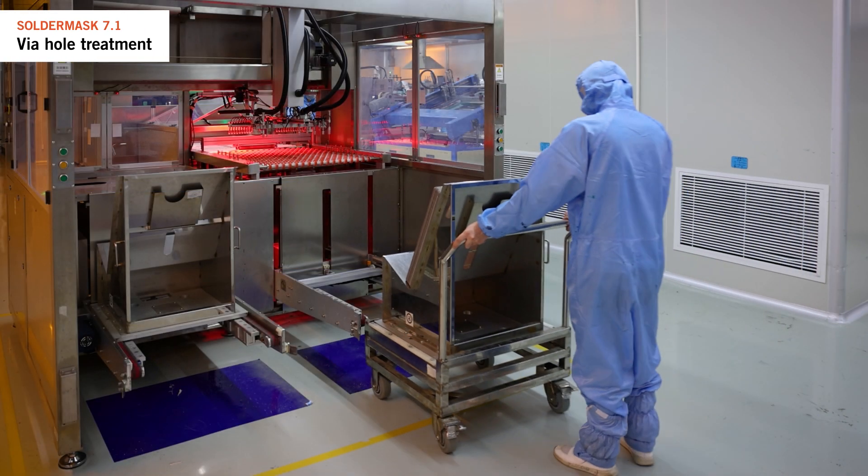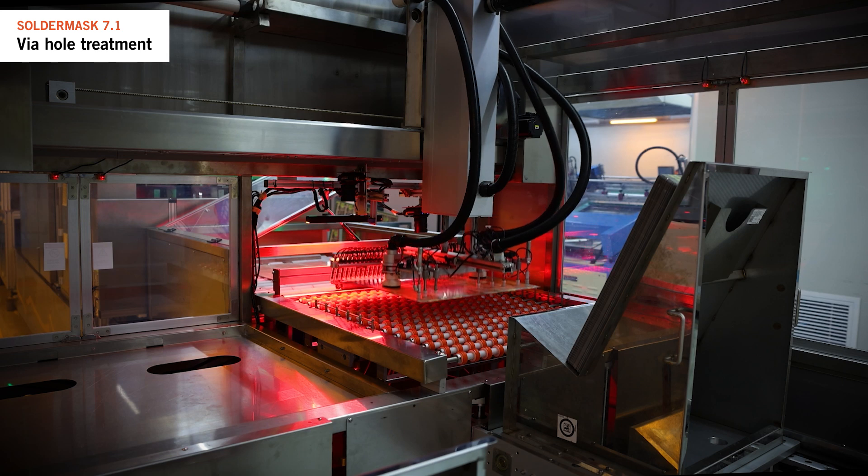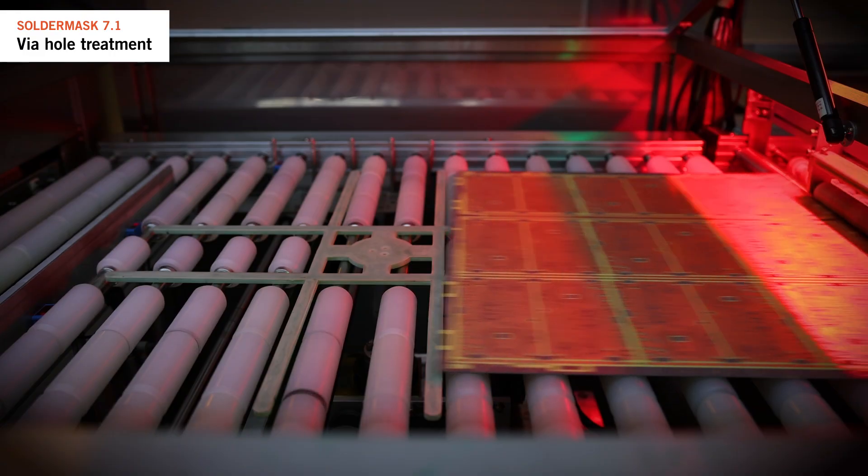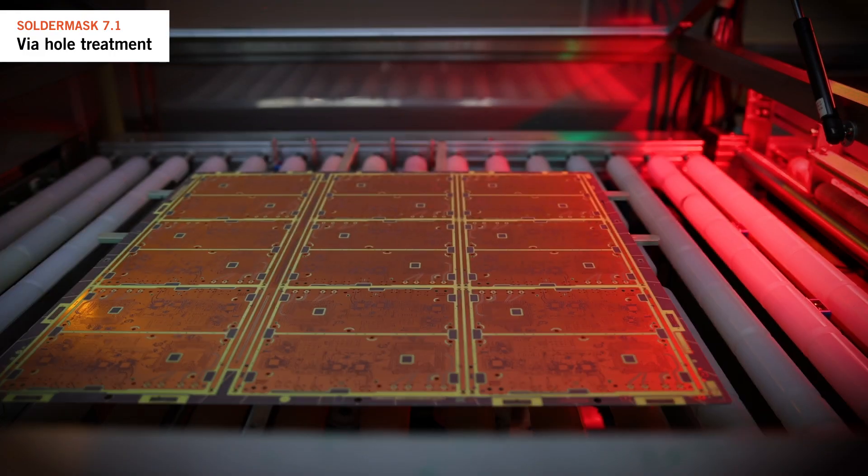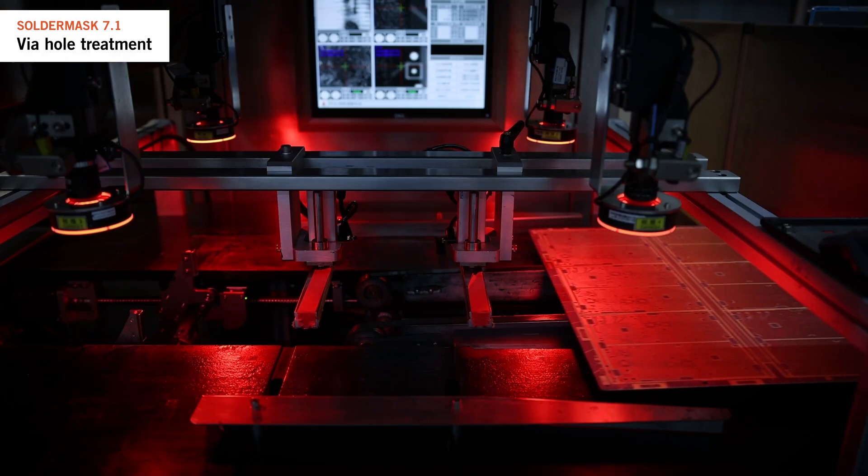We fill via holes to make the PCB more reliable and aid in the assembly process. This enhances the PCB's reliability by reducing the likelihood of any chemistry becoming trapped within a partially filled via and prevents liquid leakage onto the surface.